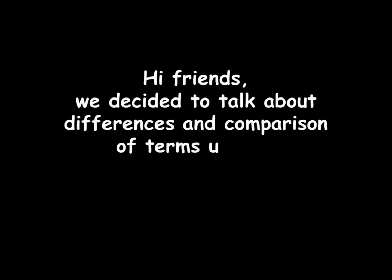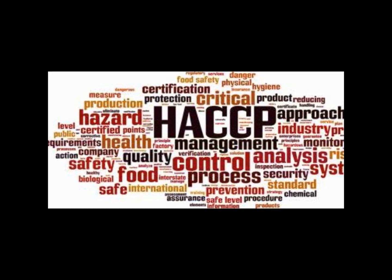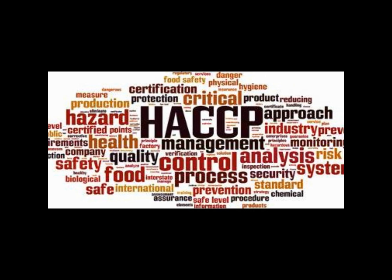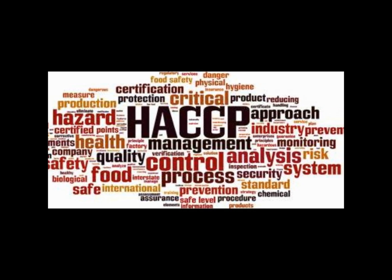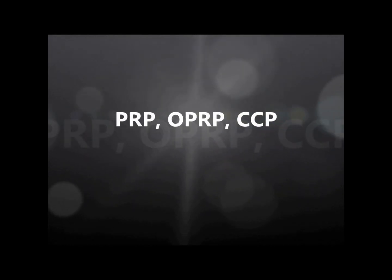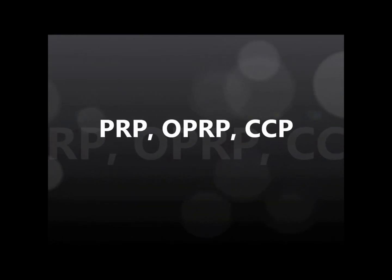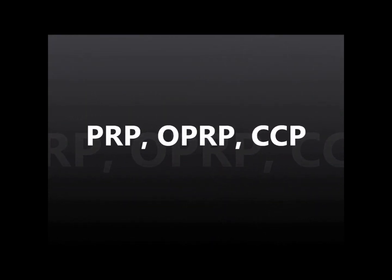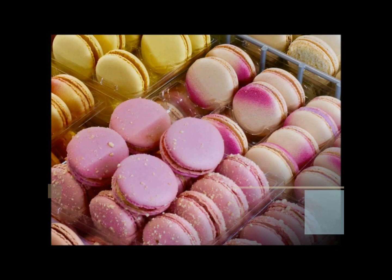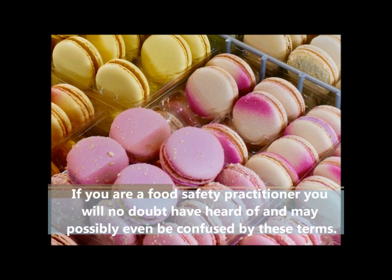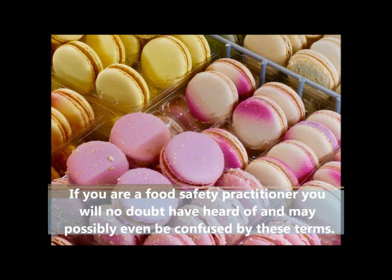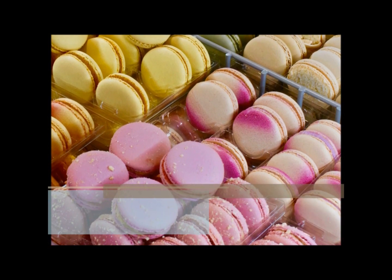Hi friends, we decided to talk about differences and comparison of terms used in food safety management system. Food Desk hopes this will be helpful to our friends to clarify the meaning of the common terms used in the food industry. In the first episode, today we discuss about PRP, OPRP, and CCP. If you are a food safety practitioner, you will no doubt have heard of, and may possibly even be confused by, these terms.